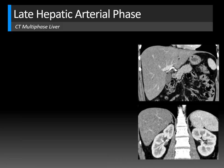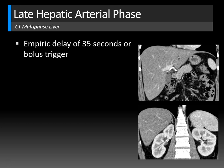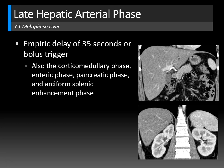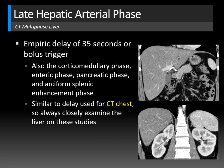The late hepatic arterial phase can be done with an empiric delay of 35 seconds after contrast injection, or with a bolus trigger evaluation to determine the optimal phase of enhancement. This phase is the same as the corticomedullary phase, the enteric phase, the pancreatic parenchymal phase, and the phase where you see arciform splenic enhancement — that tiger-stripy appearance of the spleen. Notably, this 35-second delay is similar to the delay many centers use for CT chest with contrast, so you may also be capturing a late hepatic arterial phase when reading chest CTs.